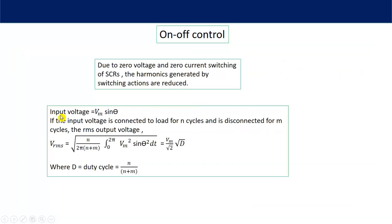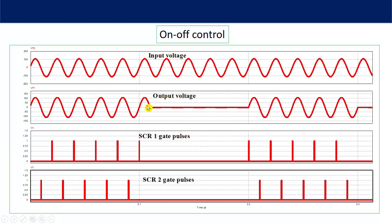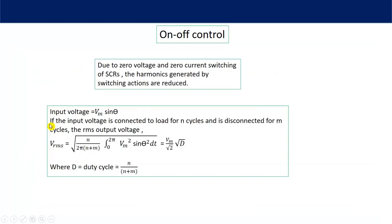The input voltage is vm·sin(θ), connected to the load for n number of cycles and disconnected for m cycles. To find the RMS output voltage: compute the integral from 0 to 2π of vm²·sin²(θ)·dθ for one cycle, multiply by n cycles, then divide by the complete time period (n + m)·2π. This gives: V_rms = (Vm/√2) × √d, where d = n/(n + m) is the duty cycle. By controlling the duty cycle — or the number of on-cycles — we can control the RMS output voltage.